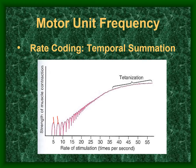As twitches become more frequent, we take the slack out of the series elastic components. By the fourth twitch, tension is no longer returning to zero between contractions, becoming increasingly frequent until finally we get a summation of tension — approaching tetanus.